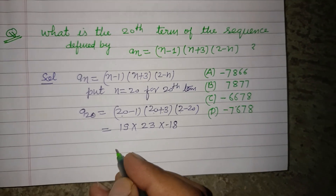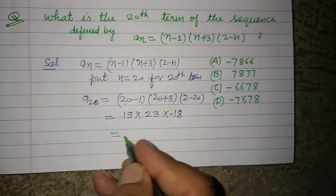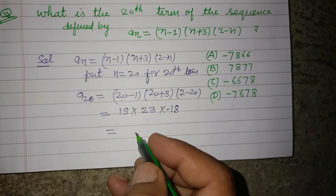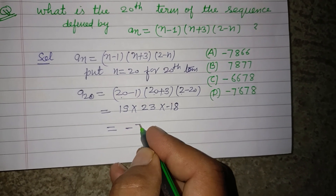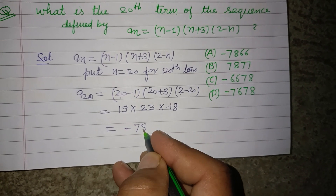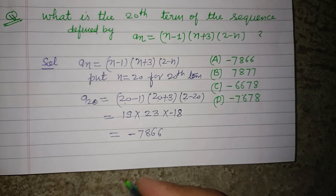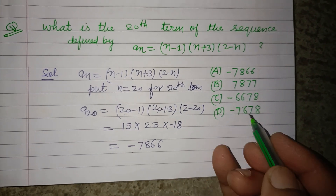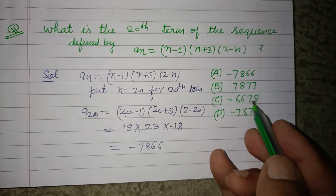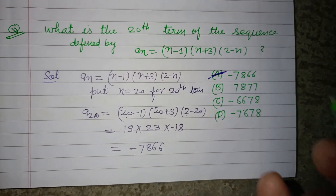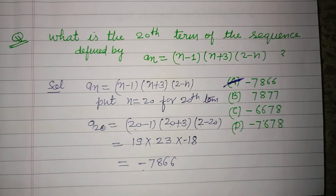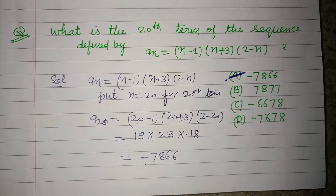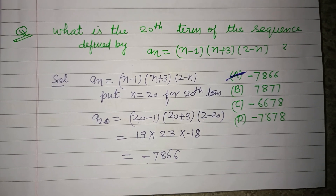Multiplying these together we get -7866. So the correct answer is -7866, which is found in option A. So option A is correct. I hope you got it — please like the video, subscribe to the channel, thanks for watching.